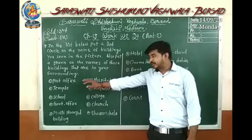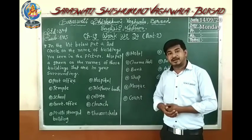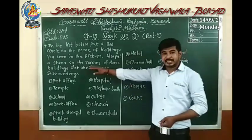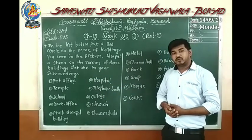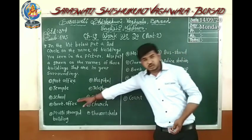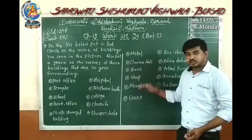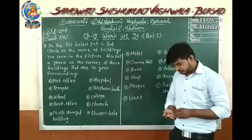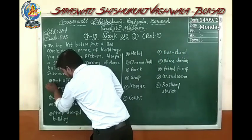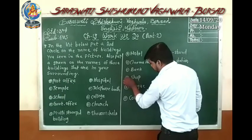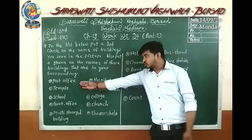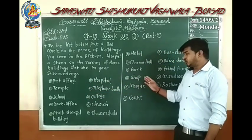Whichever buildings are given in the textbook picture, on those names we have to circle with red color. Those buildings that are nearby us, on those names we have to circle with green color. So in the beginning picture, we have seen post office, hospital, school, and shop. We will fill red color on those.